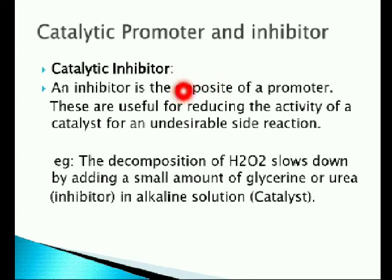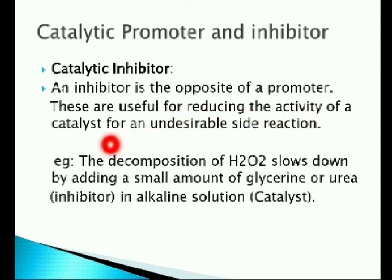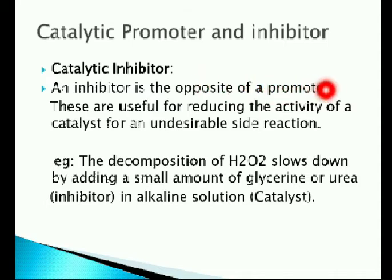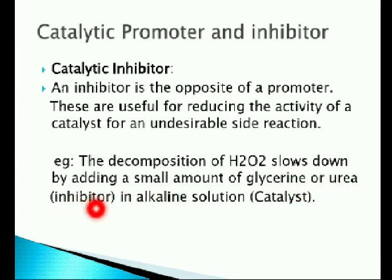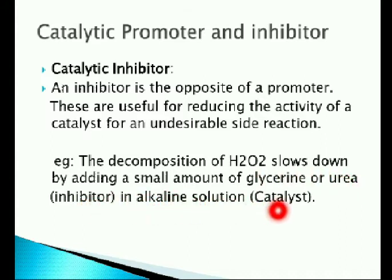The next term is catalytic inhibitor. The role of a catalytic inhibitor is exactly opposite to that of a promoter. These are useful for reducing the activity of a catalyst for an undesirable side reaction. Catalytic inhibitors are substances which reduce the activity of the catalyst and retard the chemical reaction. Example: the decomposition of hydrogen peroxide slows down by adding a small amount of glycerin or urea as an inhibitor, with alkaline solution acting as the catalyst. Here glycerin or urea acts as the catalytic inhibitor.